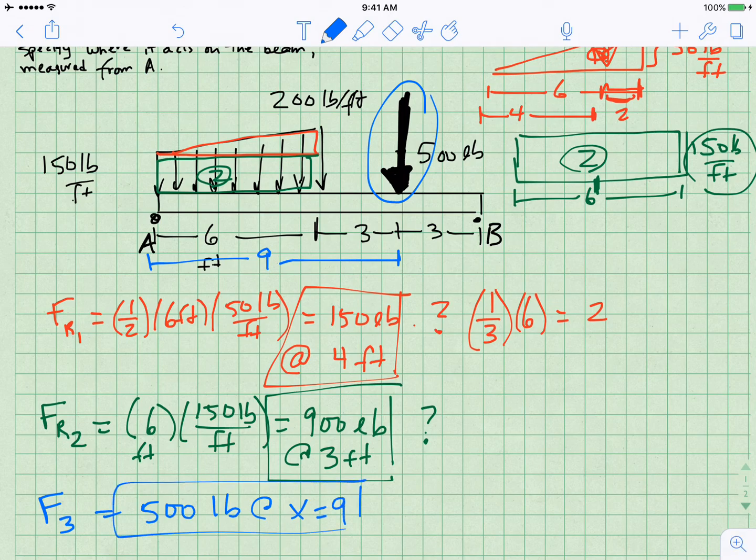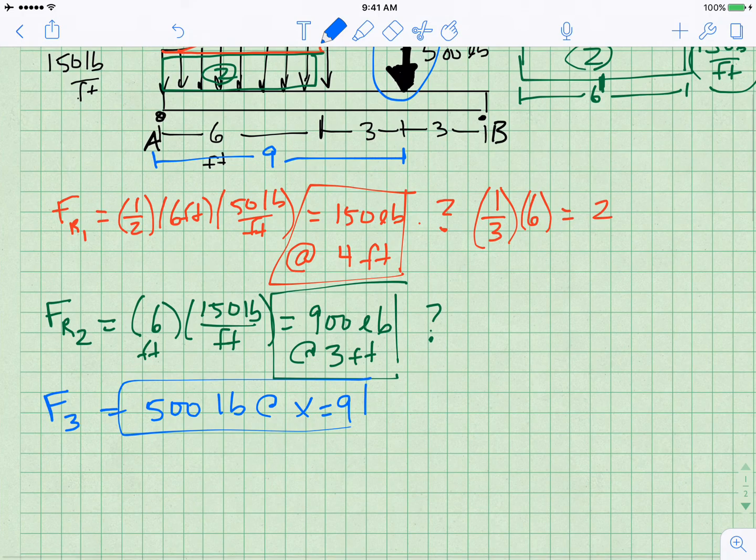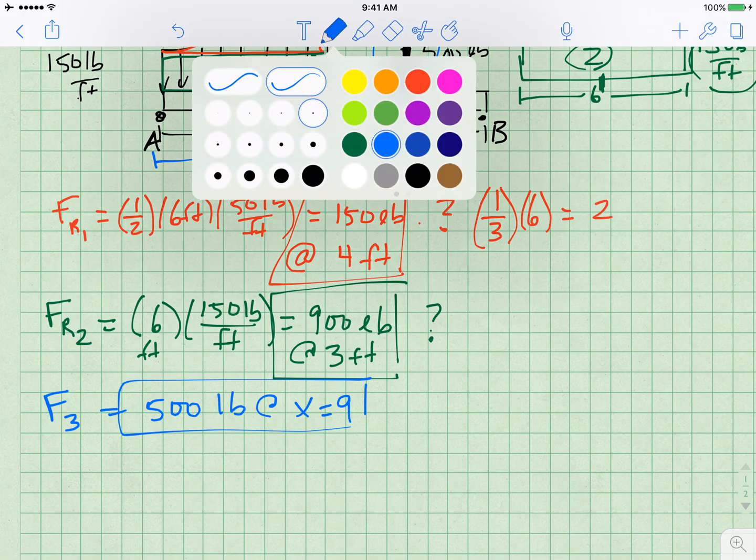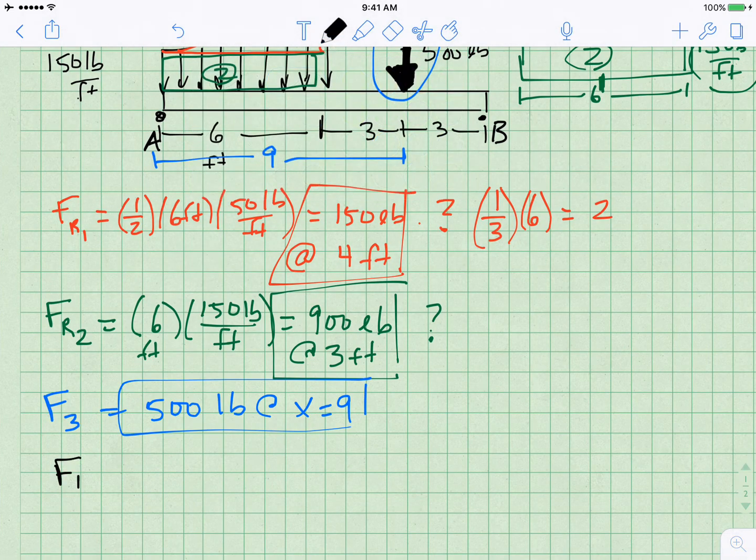And so the third thing I have, F3 is 500 pounds at x equals nine. So that's my three elements. What is my resultant force? That's just going to be the sum of what I've got. So the resultant force is equal to F1 plus F2 plus F3.